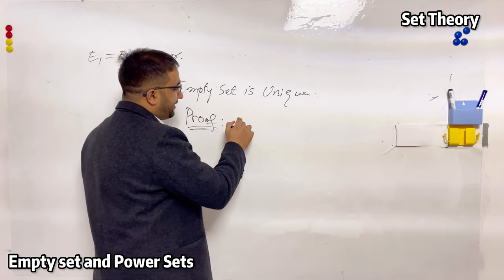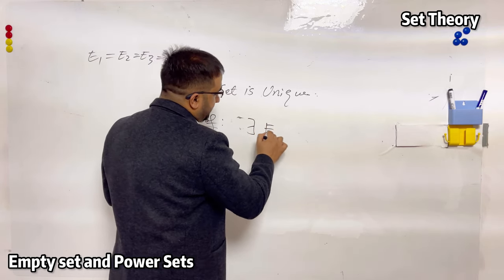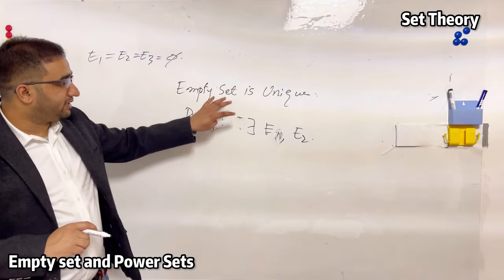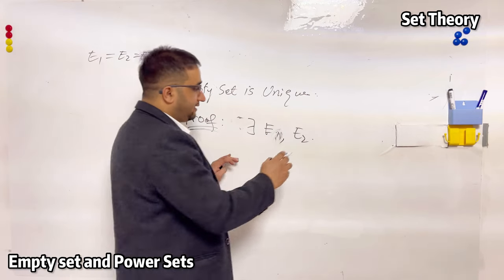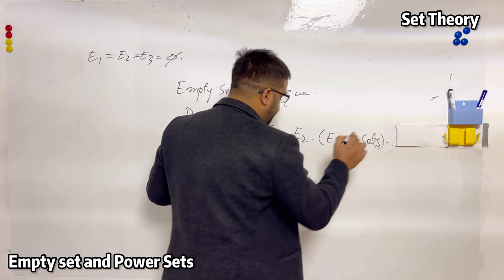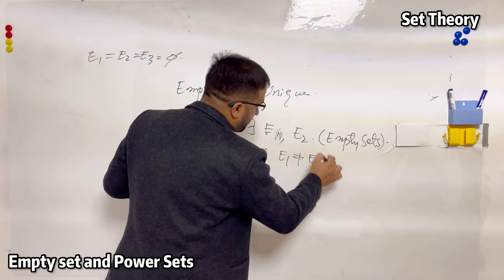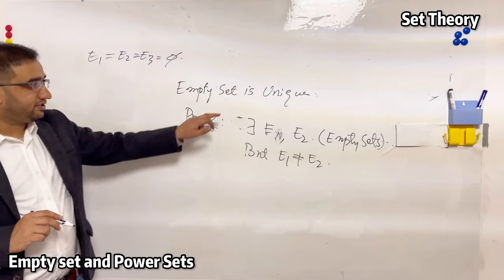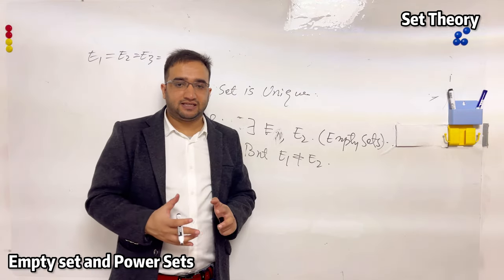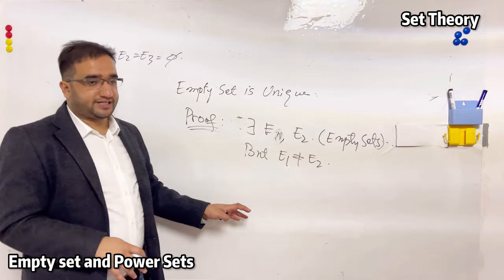I will assume that there exist two sets E1 and E2, both of which are empty sets, but E1 is not equal to E2 — they are not the same. I'm assuming the contradiction: that there exist two empty sets which are different from each other.